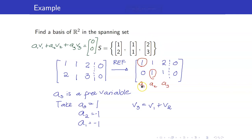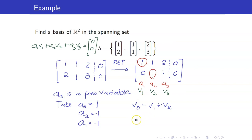Let me show you why the corresponding vectors form a basis. A1 is the coefficient for V1, A2 for V2, and A3 for V3. The pivot columns correspond to V1 and V2, which will form a basis, while the non-pivot column corresponds to the redundant vector V3. Your basis here is {(1, 2), (1, 1)}.